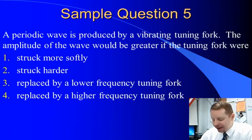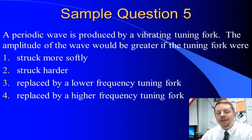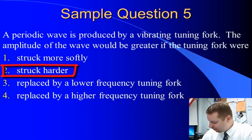A periodic wave is produced by a vibrating tuning fork. The amplitude of the wave would be greater if the tuning fork were struck more softly, struck harder, replaced by a lower frequency tuning fork, or replaced by a higher frequency tuning fork. It's interesting here, in this problem they talk about lower and higher frequencies. Note that when you hear a sound wave, higher frequency corresponds to a higher pitch. A lower frequency corresponds to a lower pitch. That's not going to help us though. If we want the amplitude to be greater, we need to put more energy in it. We get more energy, more loudness, by striking it harder. So the correct answer must be 2.